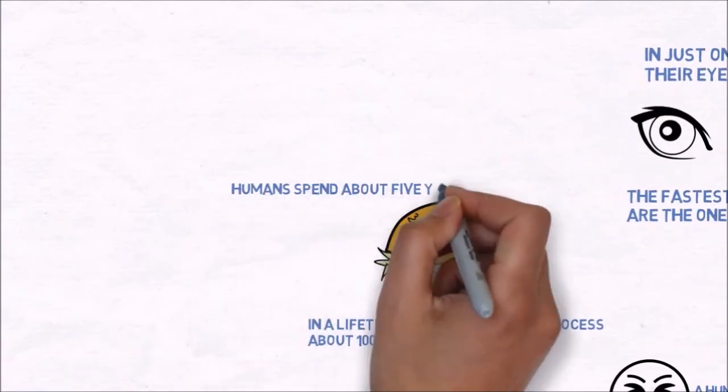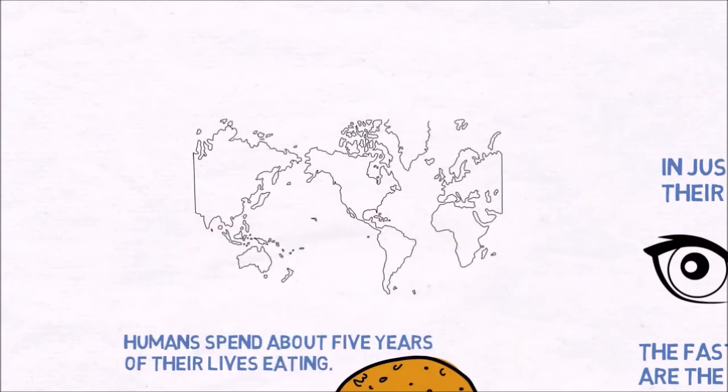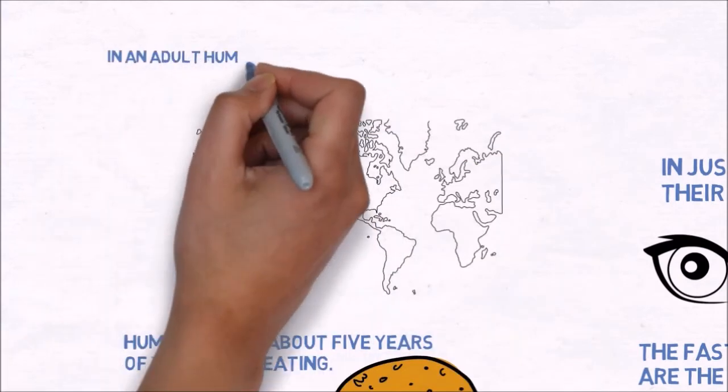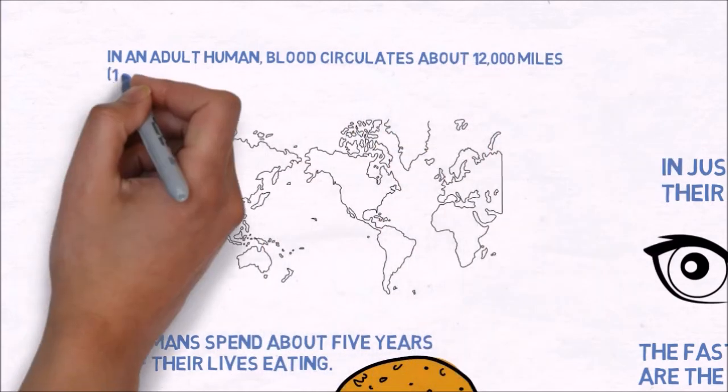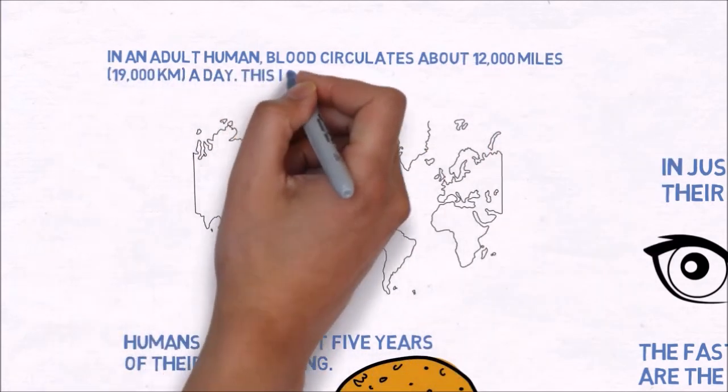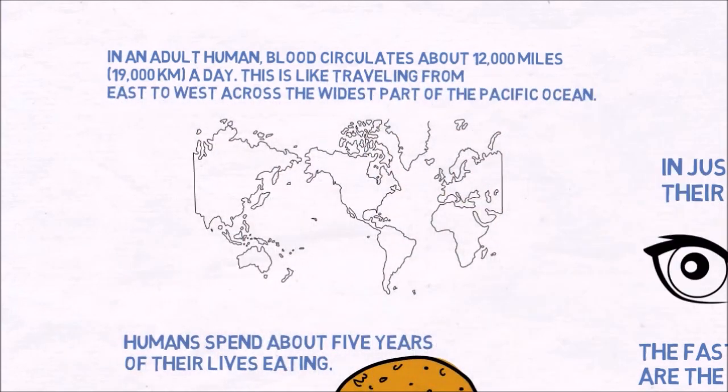Humans spend about five years of their lives eating. In an adult human, blood circulates about 12,000 miles a day. This is like traveling from east to west across the widest part of the Pacific Ocean.